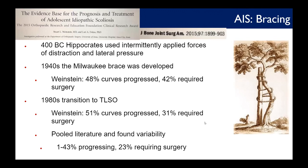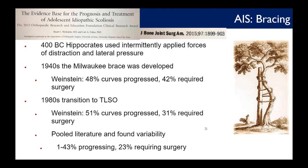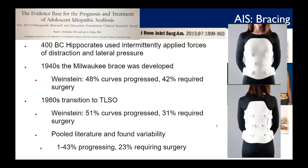A brief history of bracing: in 400 BC, Hippocrates used intermittently applied forces of distraction and lateral pressure. In the 1940s the Milwaukee brace was developed. In the 1980s treatment transitioned to TLSOs and other braces. Unfortunately, for many years there was not a solid evidence base for bracing, with literature showing 1–43% chance of progression and 23% still requiring surgery — a lot of variability.